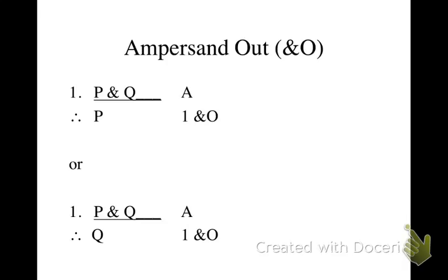And this makes sense because if P and Q is true, then we know that both P and Q have to be true, because that's the only way that the formula P and Q can be true.